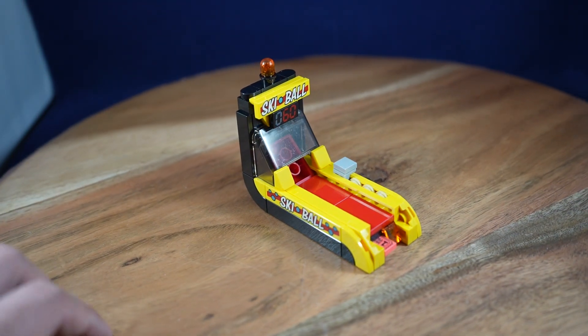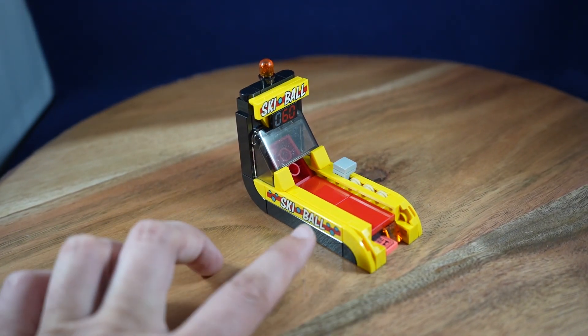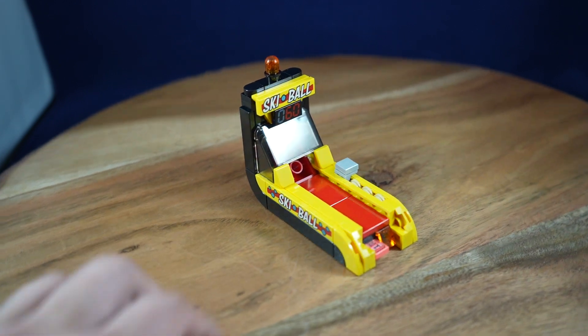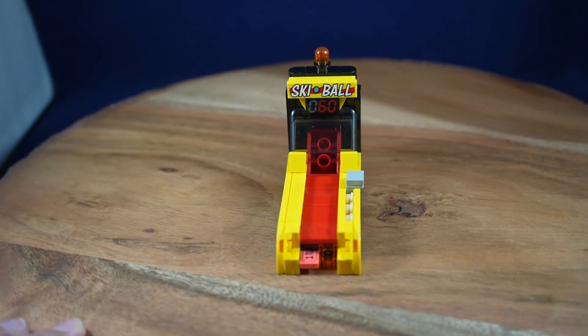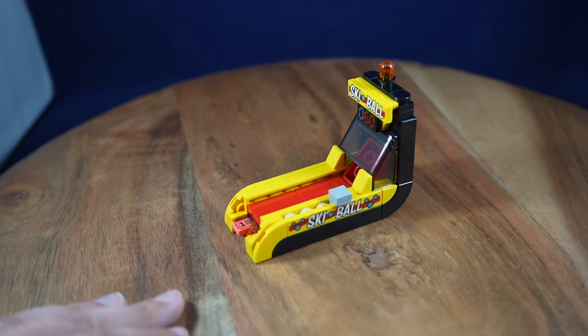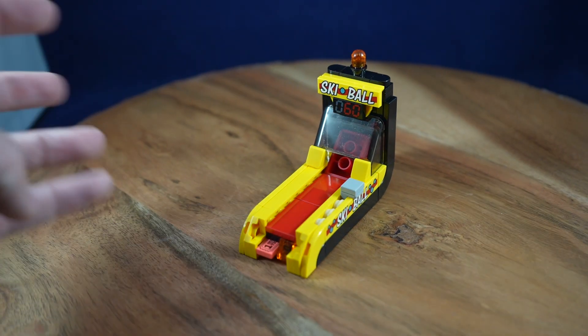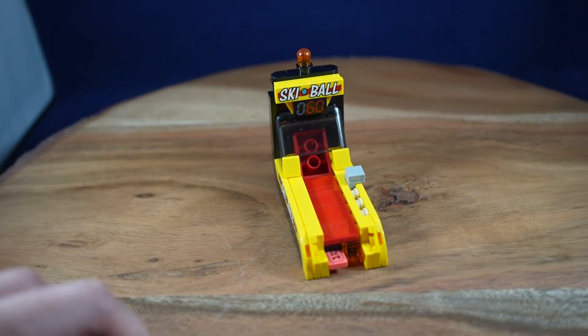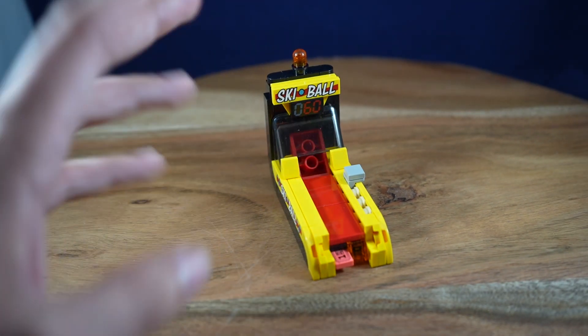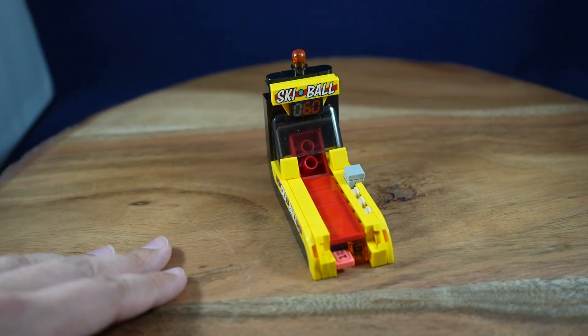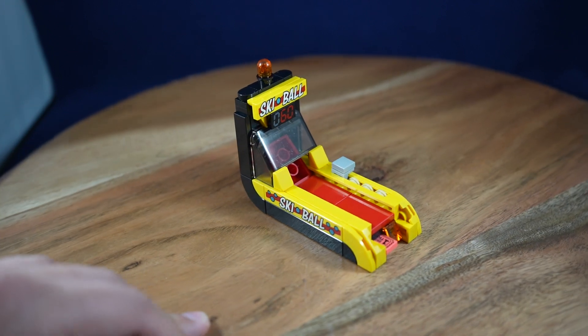And another weird thing I noticed on the skeeball design on the side the balls are blue and then they use tan balls here. So I feel like the studs used to represent the balls probably should have been a blue of some sort just to match that. But you know when you play skeeball they are kind of an off-white so it's not like it's inaccurate but it seems inconsistent with the design they're going for.